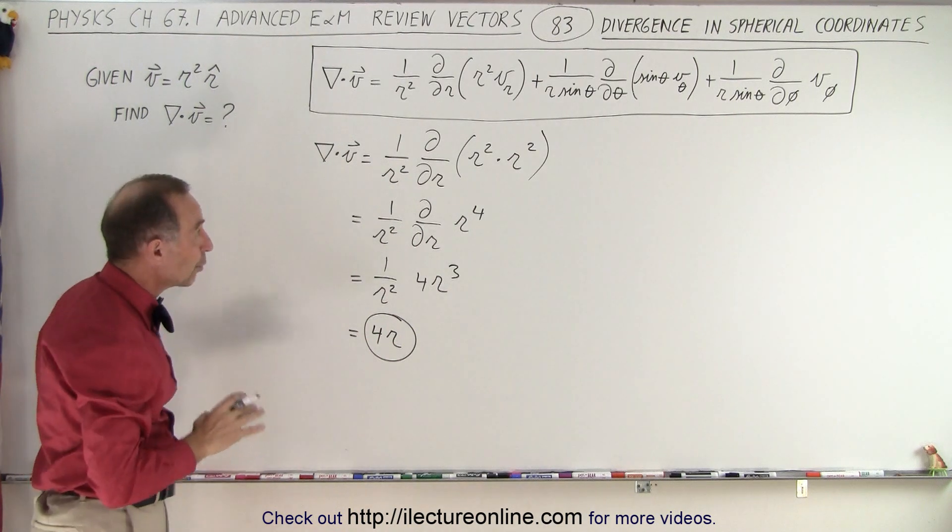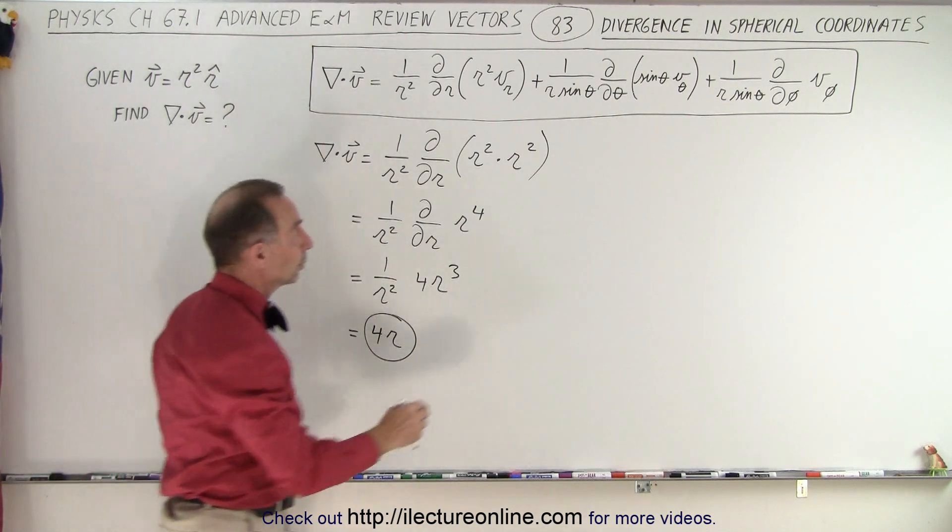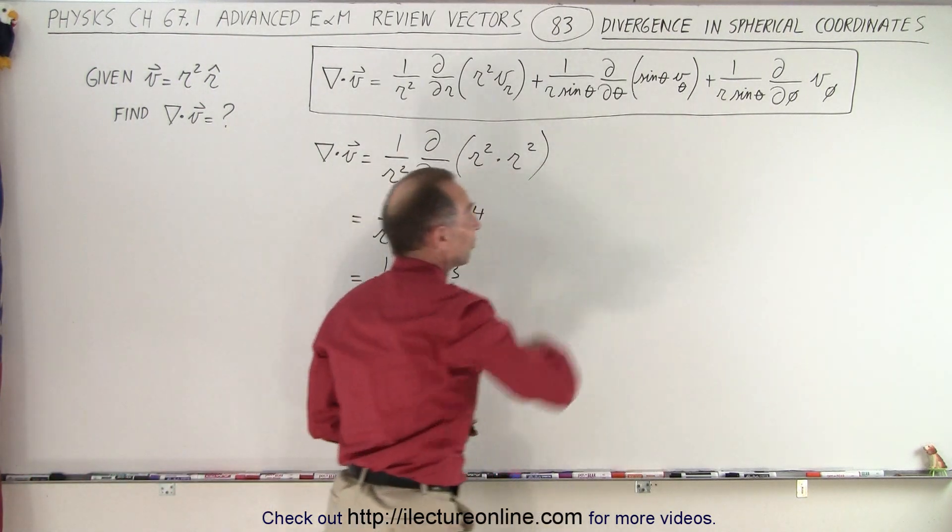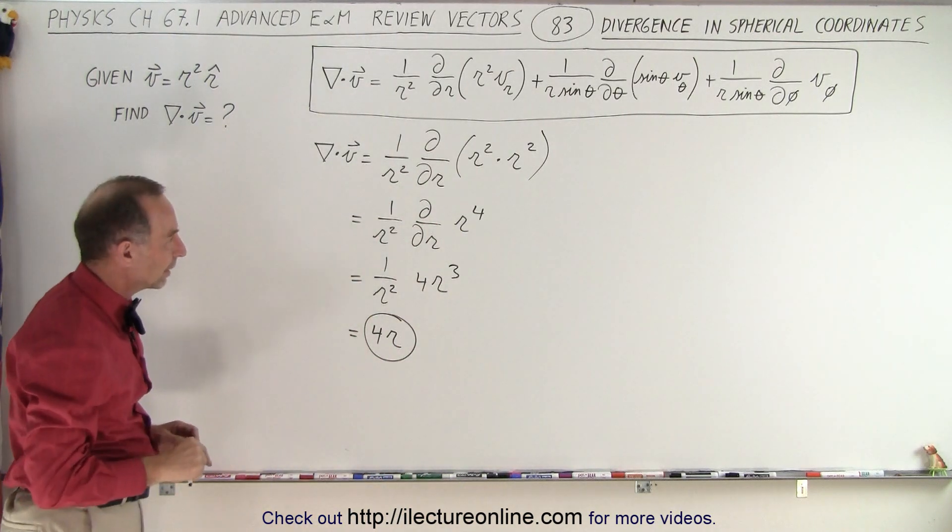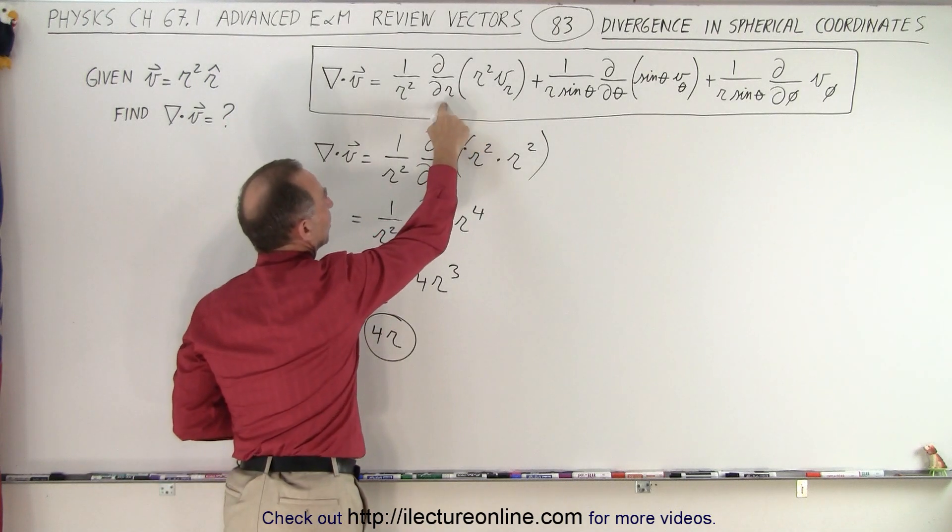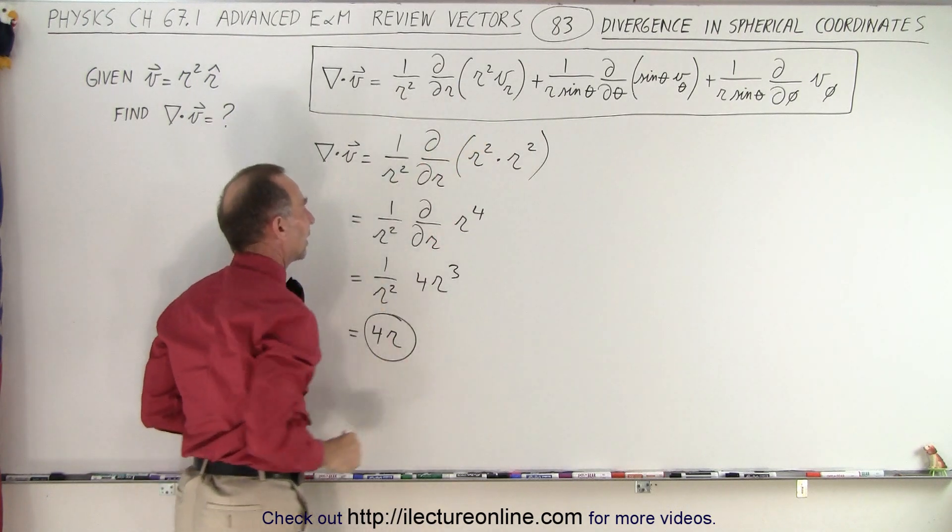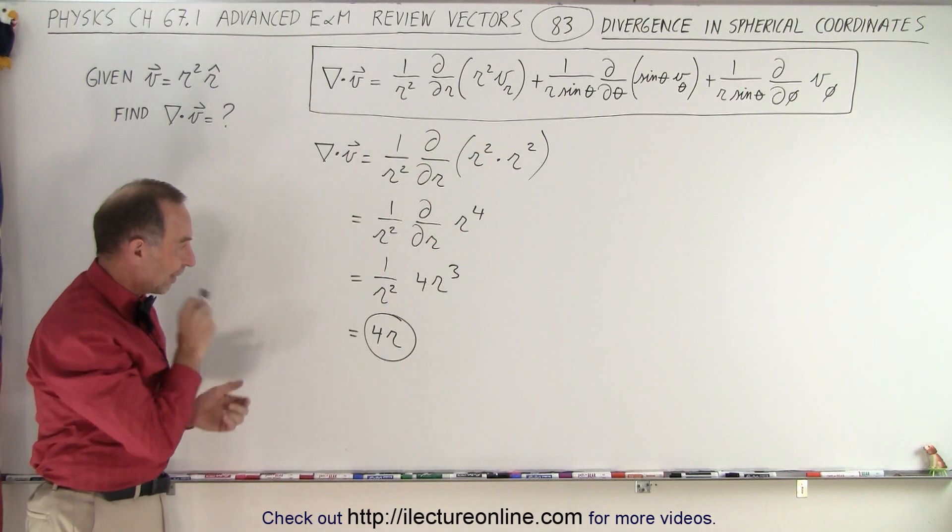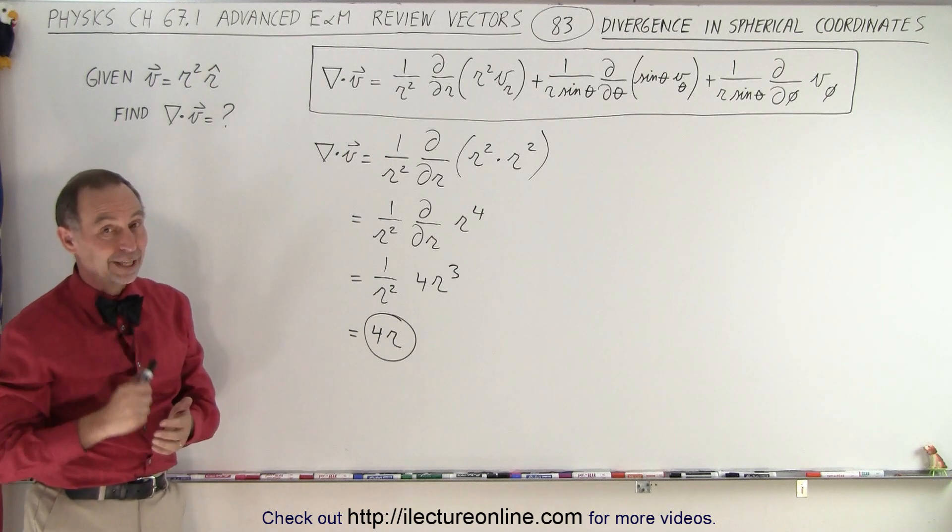So that is how we do that. The same thing would have been done with the second and the third term if there was a second and third term. We'll show you a more complex example later, but at least you can see how you do this. Then you take the partial derivative and then you multiply it times 1 over r² to get the final result. And that is how it's done.